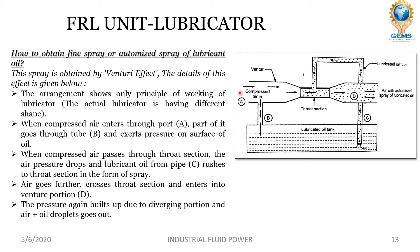When compressed air enters through port A, part of it goes down tube B into a small lubricating oil tank, exerting pressure on the surface of the oil. Through this pressure exertion, the lubricating oil flows up through a passage toward the throat section. When compressed air passes through the throat section, the air pressure drops, and lubricating oil from pipe C rushes to the throat section in the form of a spray.